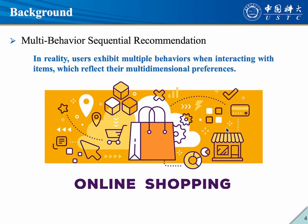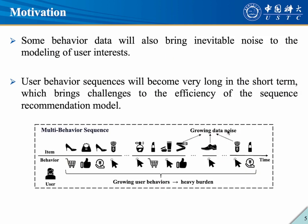In reality, users exhibit multiple behaviours when interacting with items, which reflect their multidimensional preferences. For instance, on e-commerce platforms, users can engage with items through various behaviours such as clicking, tagging as favourites, and making purchases. These diverse behaviours represent users' preferences across different dimensions and can serve as auxiliary knowledge to enrich information and enhance the accuracy of recommendations for the target behaviour.